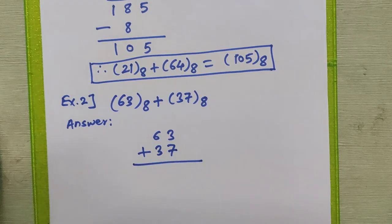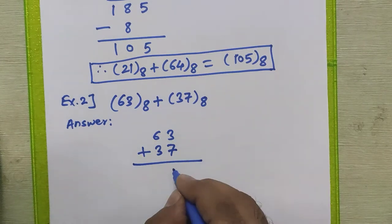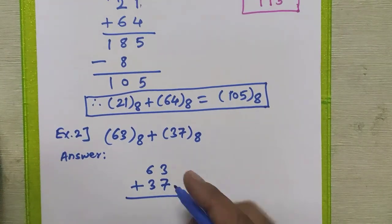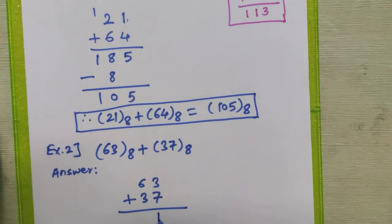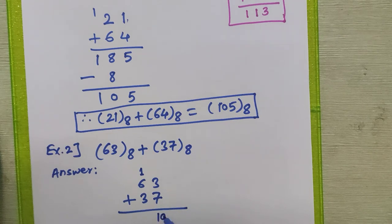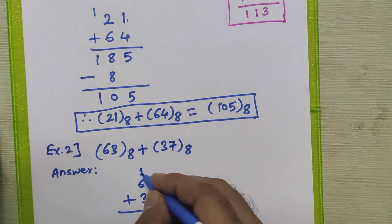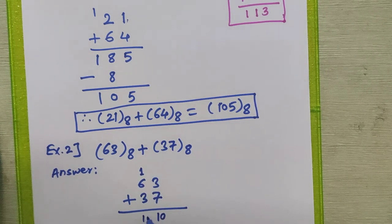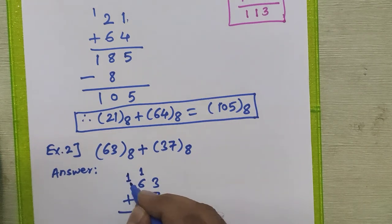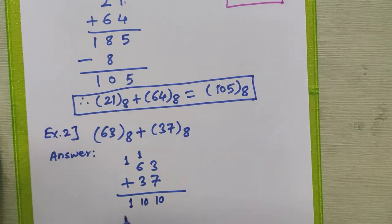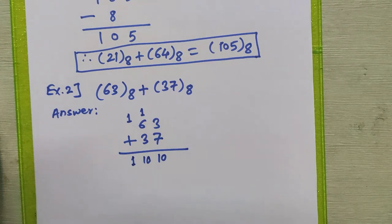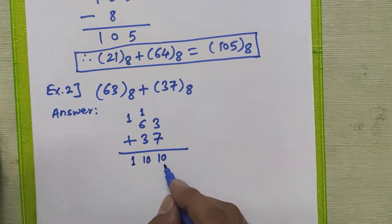Performing the addition: 3 plus 7 becomes 10, which is not in the valid range of octal digits — it exceeds the last valid digit — so we write 10 here and generate a carry. Then 1 plus 6 is 7, and 7 plus 3 is again 10. We write 10 here and carry is generated for the next step. The final result has invalid digits — 10 is not valid for the octal number system.